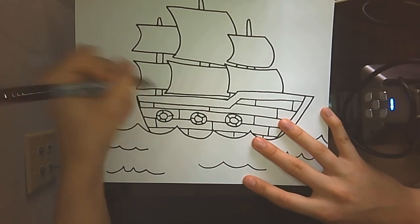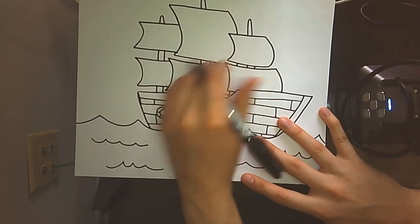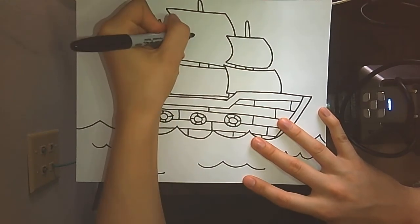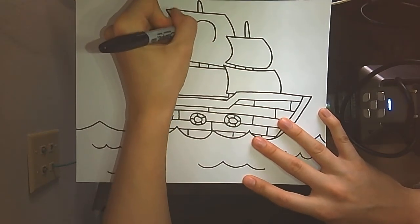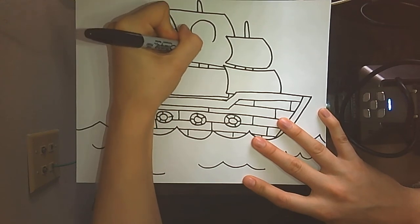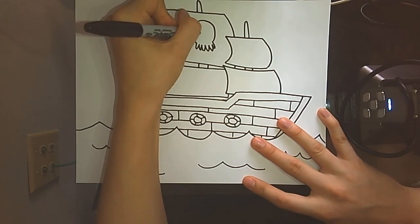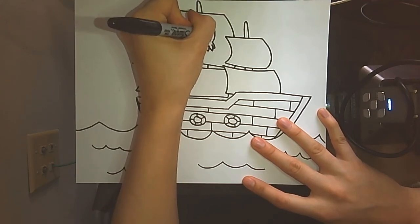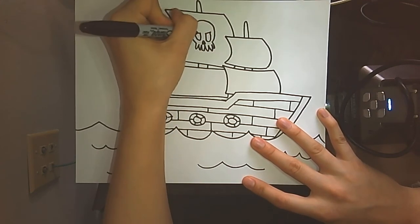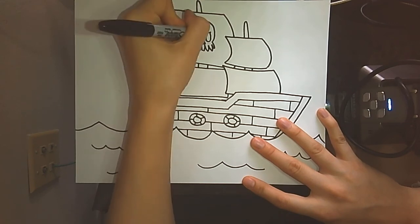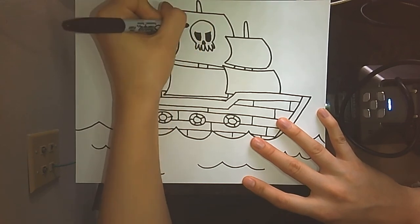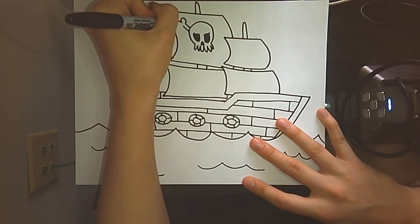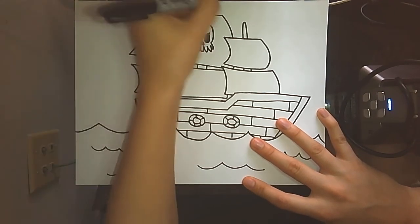Now if this is a pirate ship you might consider adding something to the sails. With pirate ships it's normally like a skull and crossbones. If you want to do a skull, here's my skull. You can make yours different. We're gonna give them mean eyes because it's a pirate ship. Color those in.